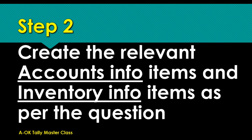The next thing you need to look out for is your inventory info. This is where you create your stock category, your stock group, your unit of measure, your stock items, and your godown location if you store your stocks in a particular location. All such information will be provided in the question for you.